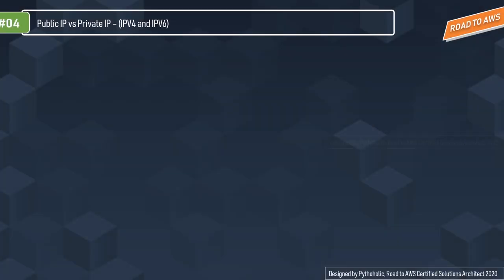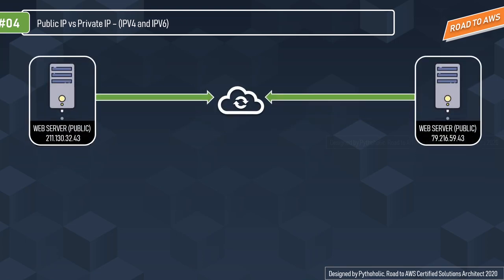Let's get back to some basics before jumping to the serious stuff. There are different types of IP addresses — IPv4 and IPv6 — and we must also be aware of public and private IPs. Two web servers can communicate over the internet using public IPs. Public IPs are addresses that can be accessed over the internet — you can think of them as a mailbox number anyone can use to communicate with you. Sites like Instagram, Facebook, and YouTube have public IP addresses mapped to a DNS or domain name.